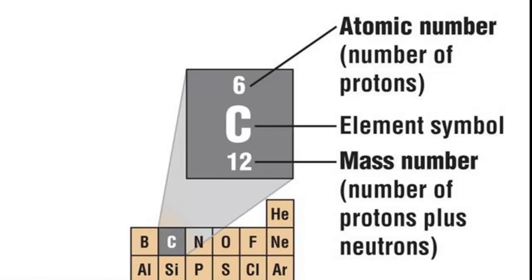The atomic number is the number of protons found within the atomic nucleus of this element. This determines the identity of the element, with each element having a different atomic number.